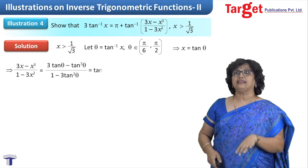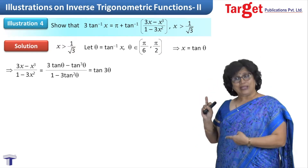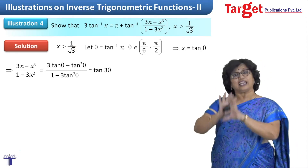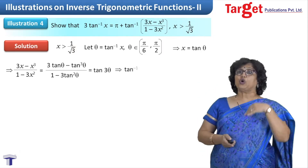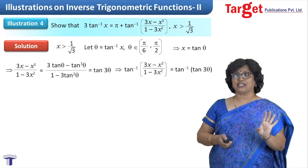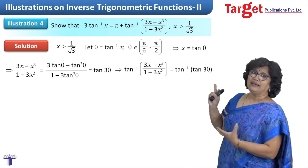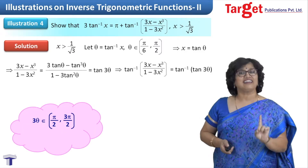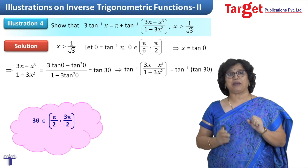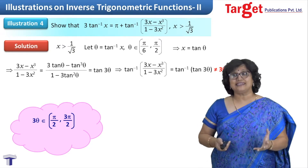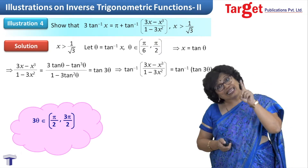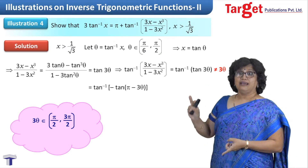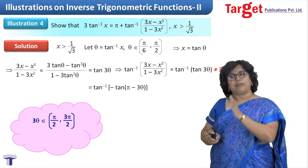Substituting x = tanθ in (3x - x³)/(1 - 3x²) gives (3tanθ - tan³θ)/(1 - 3tan²θ) = tan3θ. So tan⁻¹((3x - x³)/(1 - 3x²)) reduces to tan⁻¹(tan3θ). Now I check where 3θ lies: since θ ∈ (π/6, π/2), 3θ lies in (π/2, 3π/2), which is not in (-π/2, π/2). So I cannot write the answer as 3θ. The remedy is to rewrite tan3θ.